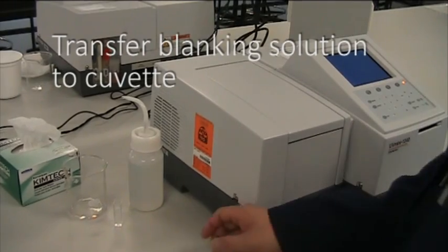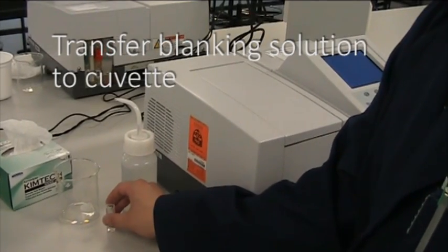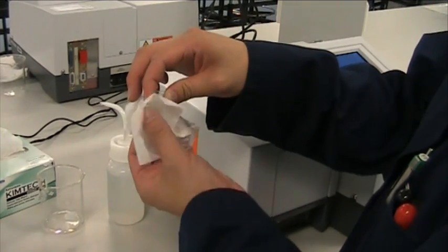First, transfer your blanking solution into a cuvette. Wipe down the clear sides of the cuvette with a clean tissue to make sure nothing blocks the light as it passes through the cuvette.